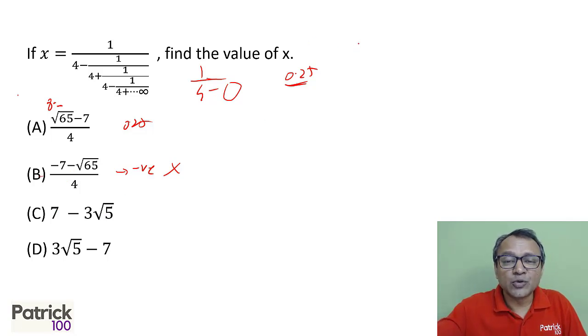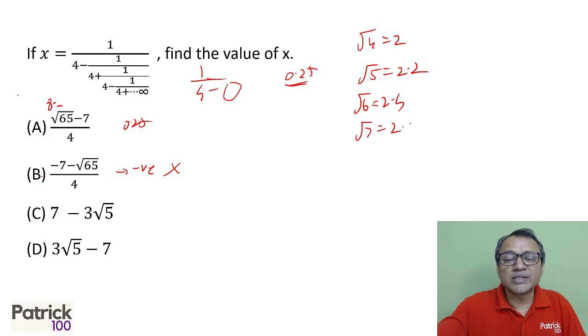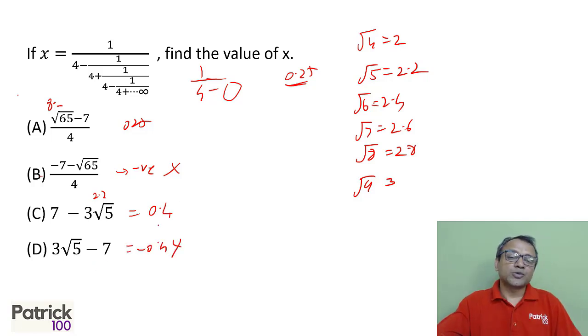Root 5, remember approximation: root 4 we take as 2, root 5 we take as 2.2, root 6 as 2.4, root 7 as 2.6, root 8 as 2.8 and root 9 as 3. So root 5 is 2.2, 3 into 2.2 is 6.6, we'll get 0.4. Even this is fine. So this will be minus 0.4. We eliminated two options. But one option we got somewhere slightly more than 0.25, one is 0.4.